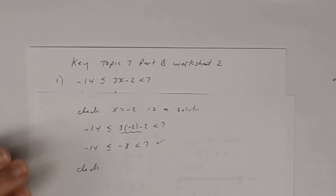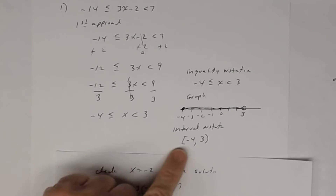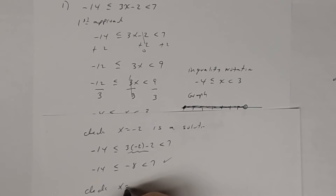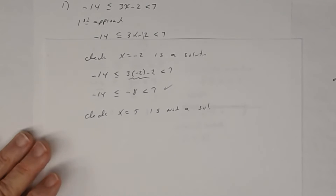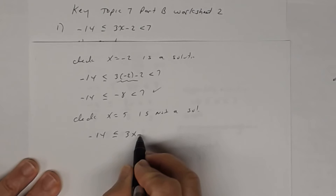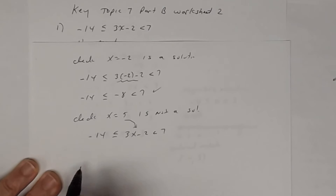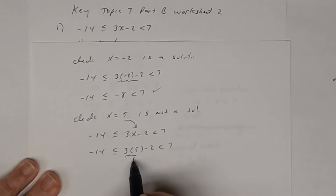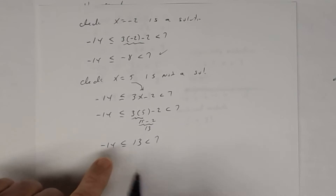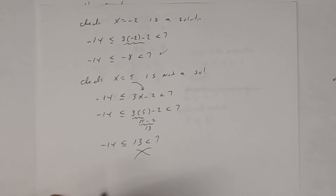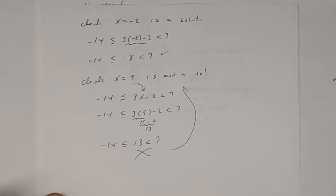Now let's check a number not in the interval — say, 5. Substituting x = 5: negative 14 ≤ 3(5) − 2 < 7. That gives negative 14 ≤ 13 < 7. Is negative 14 ≤ 13? Yes. But is 13 < 7? No — 13 is not less than 7. That's why x = 5 is not a solution.